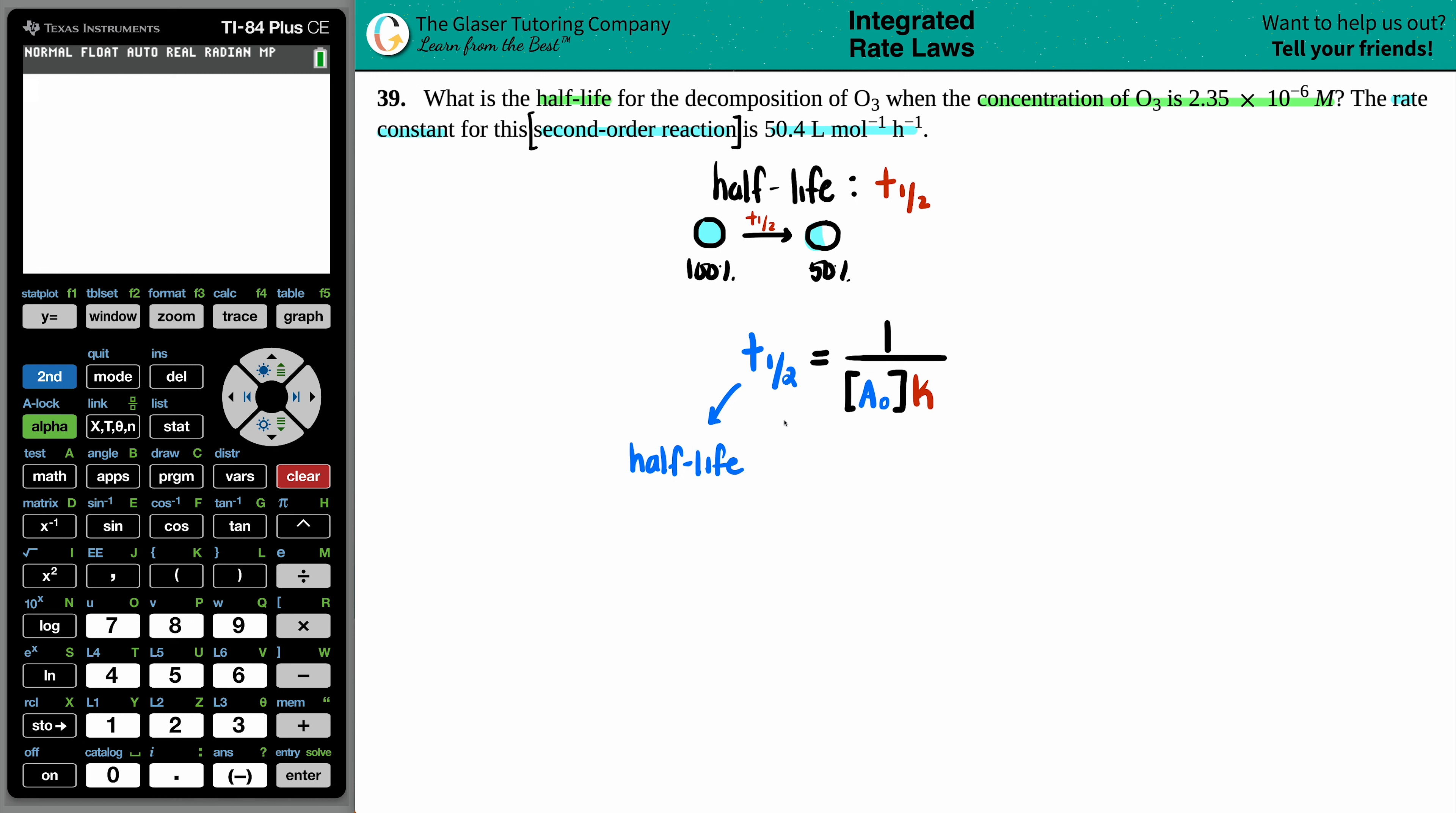Now for the second order half-life equation, it's one divided by your initial concentration. That's what the little a zero means. The zero means that it's at zero time, initial. And they did say that the ozone, the O3 is decomposing, when you had the concentration of 2.35 times 10 to the negative 6 molarity. So we know that that's how much we started with, 2.35 times 10 to the negative 6 molarity.